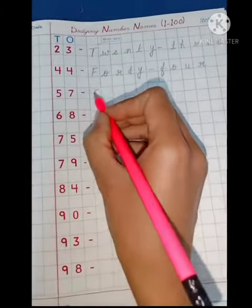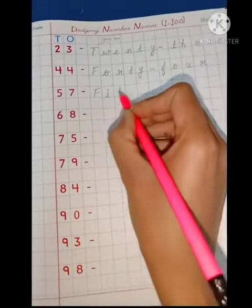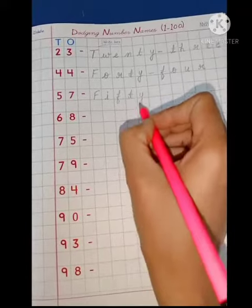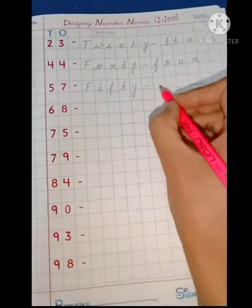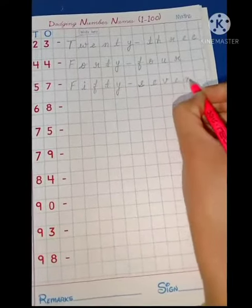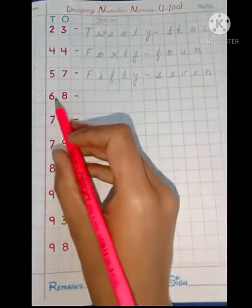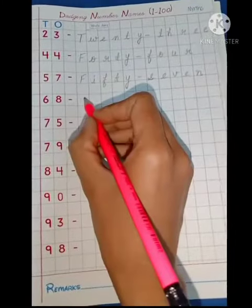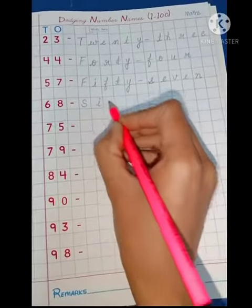Fifty-seven: F-I-F-T-Y, fifty, dash, seven, S-E-V-E-N, fifty-seven. Next is 68: S-I-X...